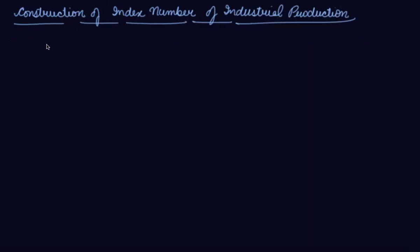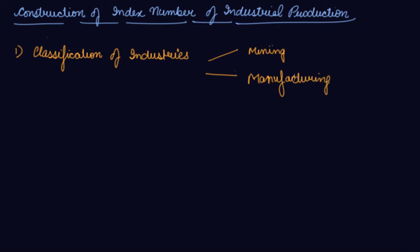The construction of index number of industrial production. Number one is classification of industries. To construct the index number of industrial production, the industries are classified into following groups: number one is mining industry, number two is manufacturing industry, and number three is electricity industry.